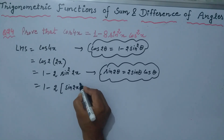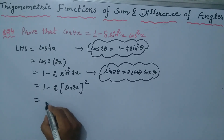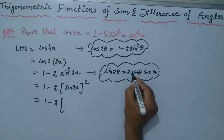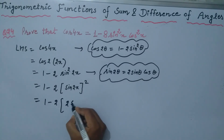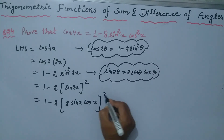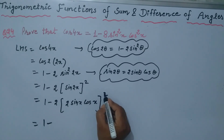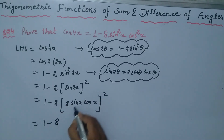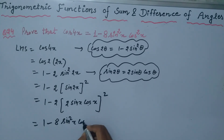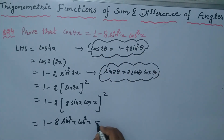Applying sin 2θ = 2 sin θ cos θ, so sin 2x = 2 sin x cos x. Therefore 1 - 2 sin²2x = 1 - 2(2 sin x cos x)² = 1 - 2 × 4 sin²x cos²x = 1 - 8 sin²x cos²x. This is the right hand side. Hence proved.